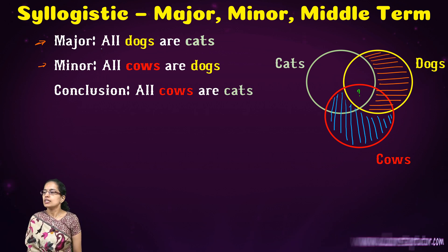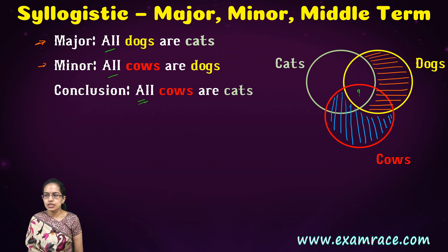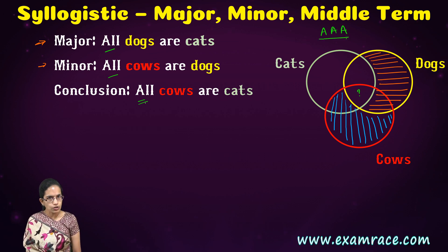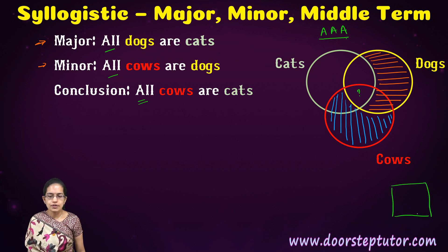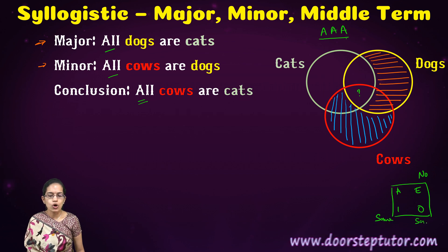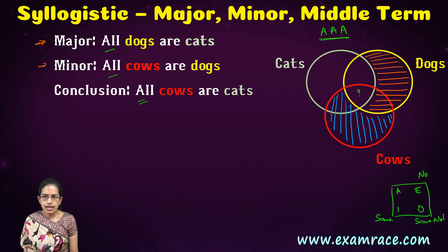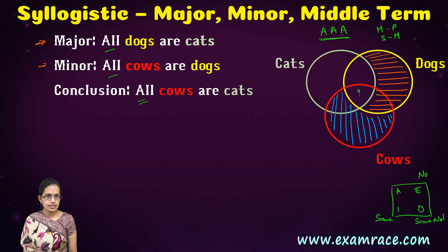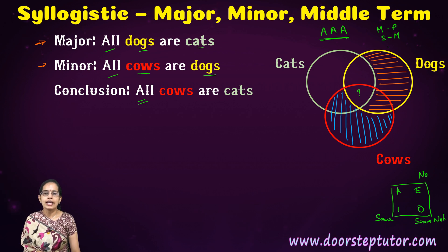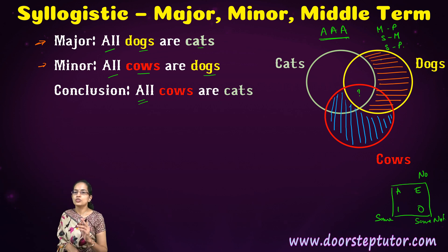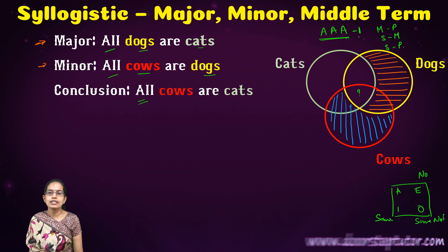Since both premises begin with 'all' and the conclusion again begins with 'all,' this is an A, A, A mood — because it is all, all, and all. In the square of opposition, if it is 'all' we call it A; 'no' is E; 'some' is I; and 'some not' is O. Each of these forms would have four figures. In the A, A, A arrangement, you have the middle term and predicate, then the subject and middle term, as seen in the diagram — and this is Figure 1. In A, A, A, Figure 1 is the only valid form.